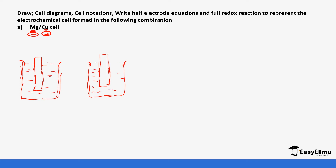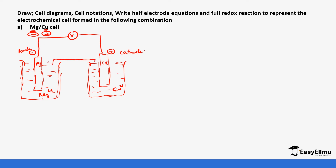Both electrodes are connected using a wire, which is connected to a voltmeter. The magnesium electrode is the anode (negative) and the copper electrode is the cathode (positive). The magnesium is dipped in a solution containing magnesium ions — for example magnesium nitrate — and copper is dipped in a solution containing copper ions — for example copper nitrate or sulfate. The two electrolytes are connected with a salt bridge. Remember to label your work to get the full marks.